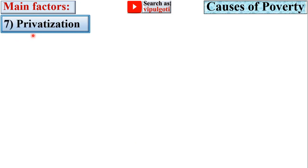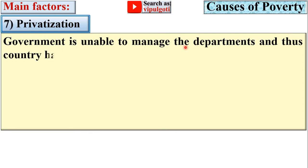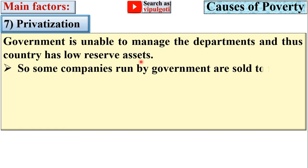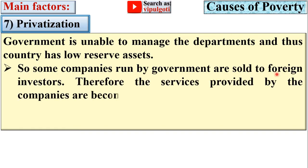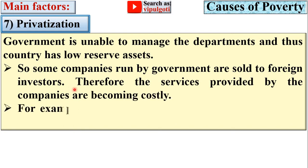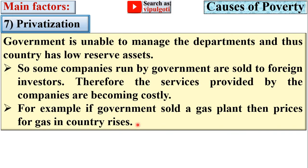Next, privatization. The government is unable to manage departments and the country has low reserve assets. So some companies run by the government are sold to foreign investors. Therefore, the services provided by those companies become costly. For example, if the government sells a gas plant, the prices for gas in the country rise, and that once again leads to poverty.